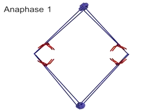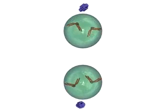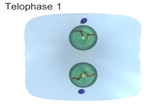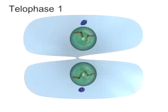During anaphase I, the pairs of homologous chromosomes are pulled apart. At this stage, the chromatids are still held together by the centromere. Two new cells are now formed, each with only one of the original pair of homologous chromosomes.